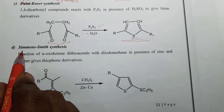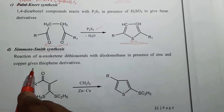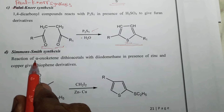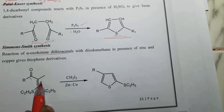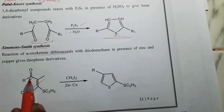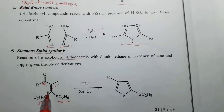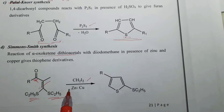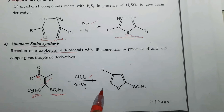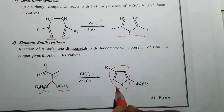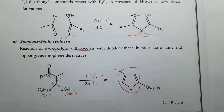Next method of preparation is Simmons-Smith synthesis. According to Simmons-Smith synthesis, alpha-oxo-ketene-dithioacetals, on treatment with diiodomethane in presence of zinc and copper, give respective thiophene derivatives.